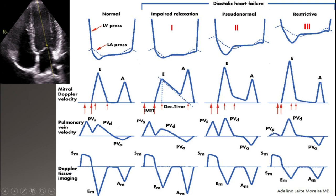The AR wave represents atrial contraction. When A increases, AR increases little by little and becomes taller. On tissue Doppler, at the beginning in the early stage, E prime is greatly affected and decreases more than A prime, so the E prime to A prime ratio becomes reversed. With progressing diastolic dysfunction, both E prime and A prime become reduced or reversed, and both decrease in velocity.